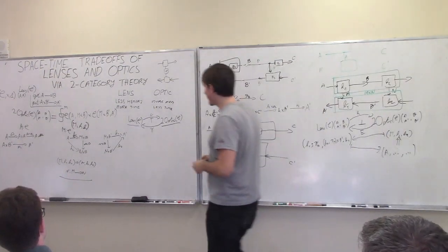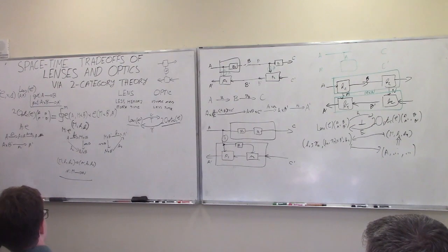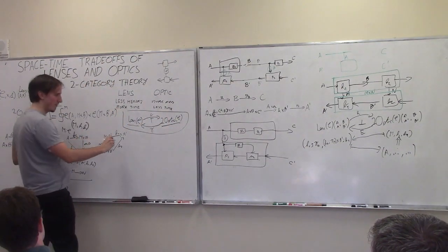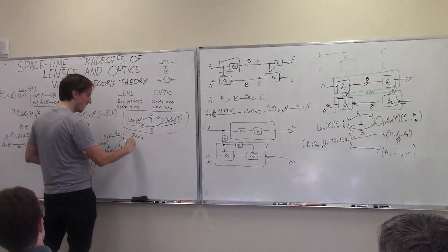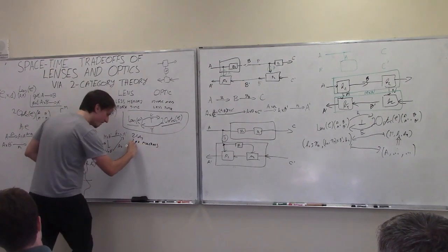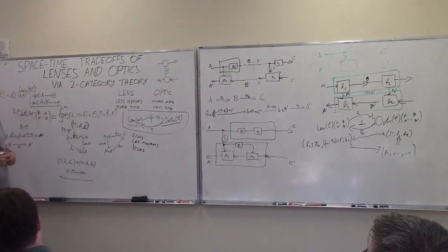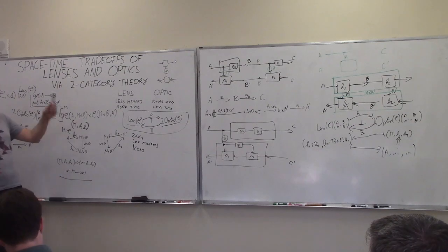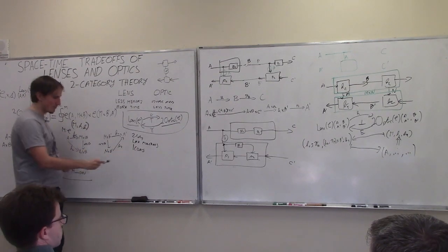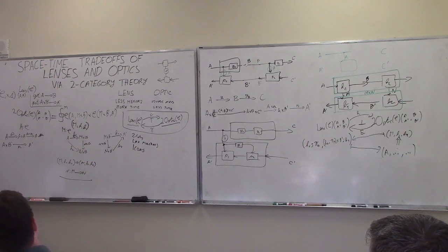What turns out is: both are true, except this is an adjunction in the two-category of two-cats, lax functors, and icons. It's a very fancy name. Icon means 'identity components oplax natural transformation.' It sort of shows us interesting things happening. The functor from lenses to two-optics is not just a functor, but an oplax functor. It's going to be identity on objects, but an interesting thing arises: it detects the different composition rule between lenses and optics.